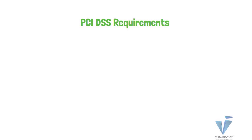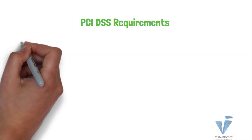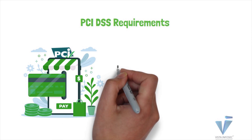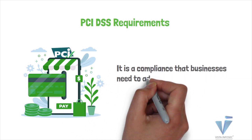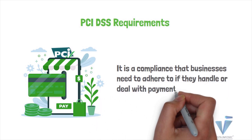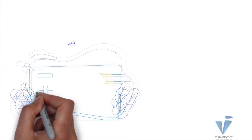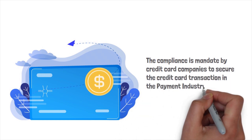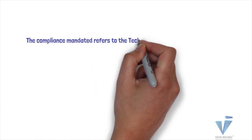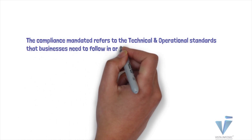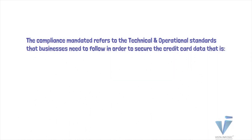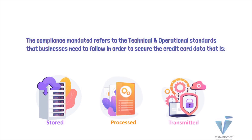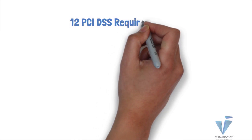Today we have taken up a very popular and highly searched query on the search engine platform, which is the 12 requirements of PCI DSS compliance. PCI DSS, which is the Payment Card Industry Data Security Standard, is a compliance that businesses need to adhere to if they handle or deal with payment card data. The compliance is a mandate by the credit card companies to secure credit card transactions in the payment industry, referring to the technical and operational standards that businesses need to follow to secure credit card data that is stored, processed, or transmitted by the merchants. The standard is developed and managed by the PCI Security Standards Council and has broadly outlined 12 PCI DSS requirements.